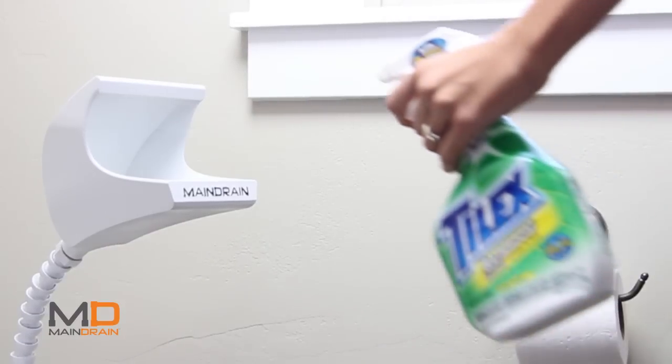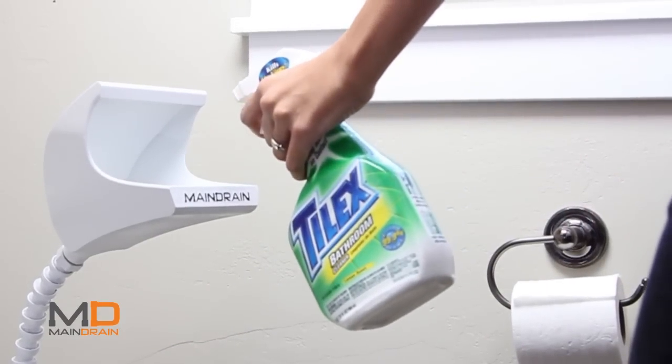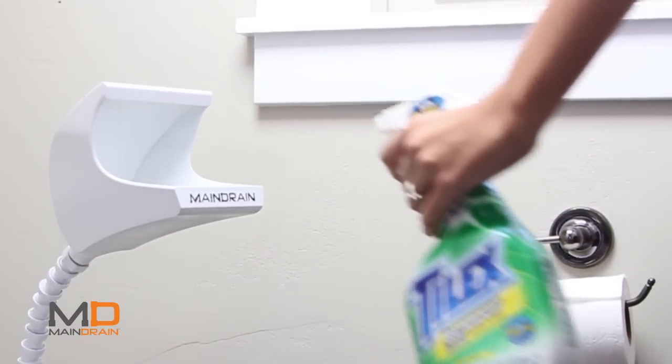As often as you'd clean your home toilet is as often as you'd clean the Main Drain, except this is quite a bit easier. No gloves, no scrubbing, no getting your hands dirty. You simply take your favorite home cleaning agent and spray it right into the head of the Main Drain and gravity will do the rest.